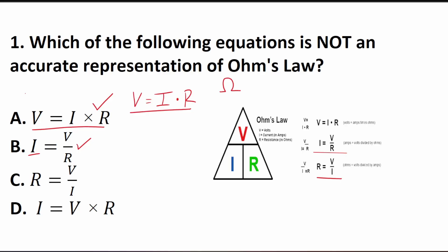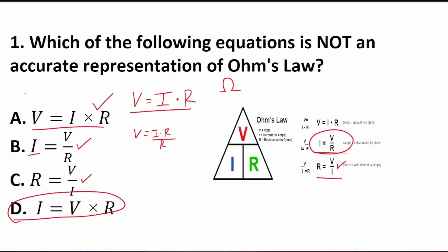Likewise, when you solve for resistance, you get resistance equals voltage over current — that is also Ohm's Law, represented in answer C. So D is the correct answer; it is not an accurate representation of Ohm's Law. To solve for I, you start with V = I × R, divide both sides by R, and get I = voltage over resistance. All you did was divide both sides by R. You do have to know Ohm's Law for this subtest.